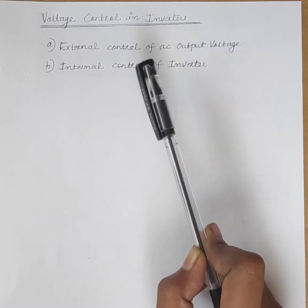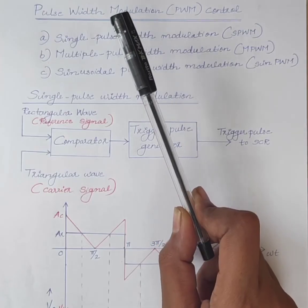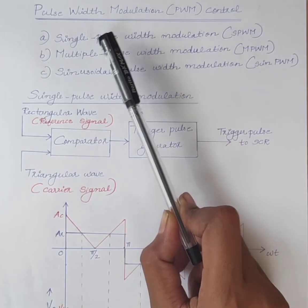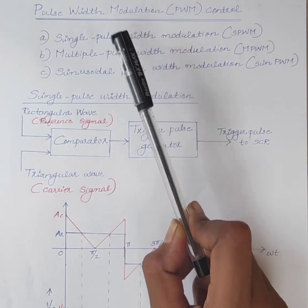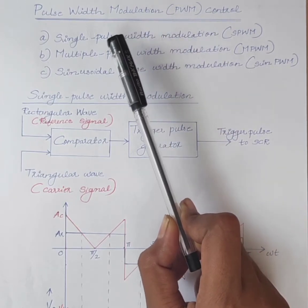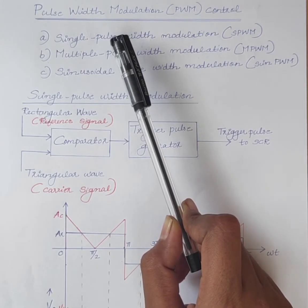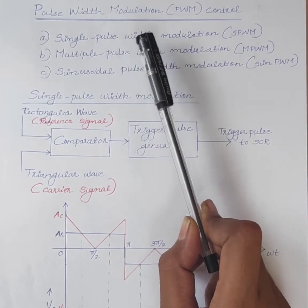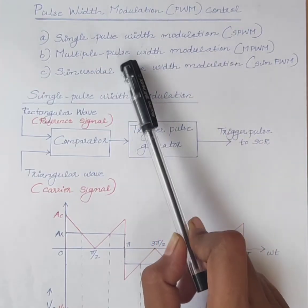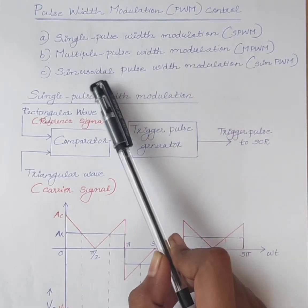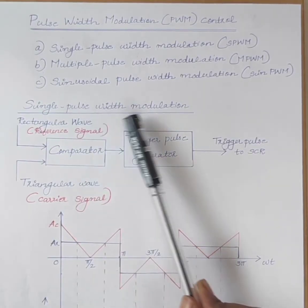The most efficient method of internal control of inverter is by pulse width modulation (PWM) technique. By using this method, a fixed DC input voltage is applied to the inverter and a controlled AC output voltage is obtained by adjusting the on and off period of the inverter switches. The commonly used PWM control techniques are: single pulse width modulation, multiple pulse width modulation, and sinusoidal pulse width modulation.